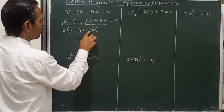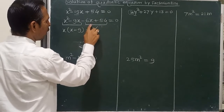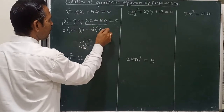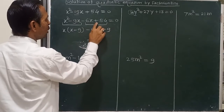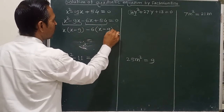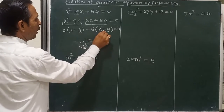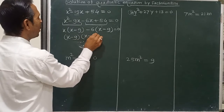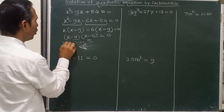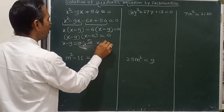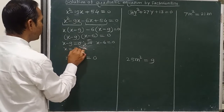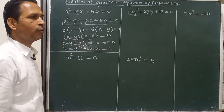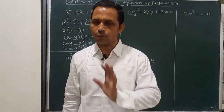Take out minus 6 as common. 54 divided by 6 gives 9, so we get minus 9 there with the sign changed. Now x minus 9 is common, so we write x minus 9 in another bracket times x minus 6, equal to 0. Therefore x minus 9 equals 0 or x minus 6 equals 0. Hence x equals 9 or x equals 6. This is our solution.